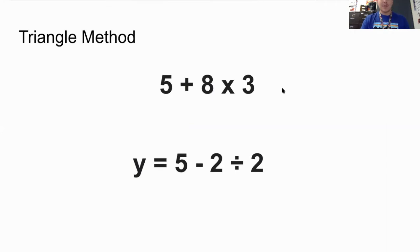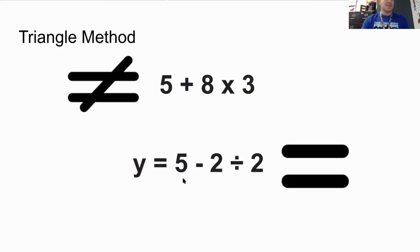We have one at the top, 5 + 8 × 3. We have one at the bottom, y = 5 - 2 ÷ 2. Now I want you to think carefully and think, what is the difference between these two number sentences? You can see that this number sentence has an equal sign. Well, this number sentence does not have an equal sign.